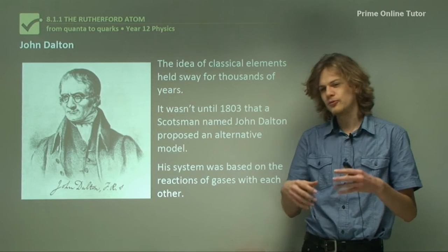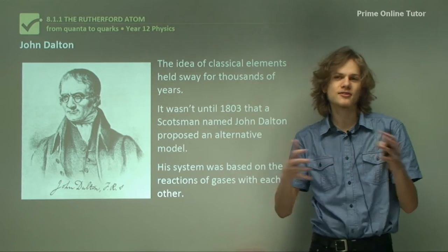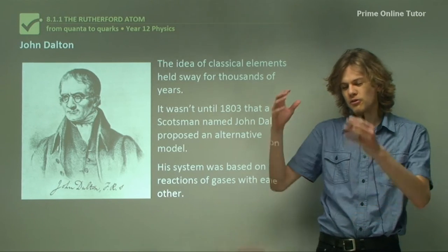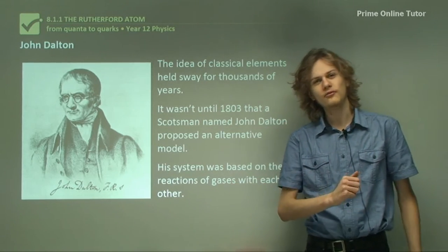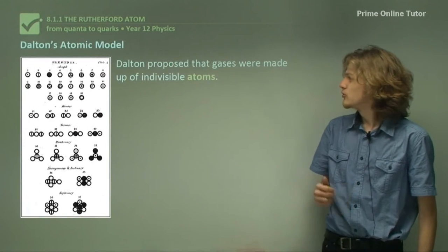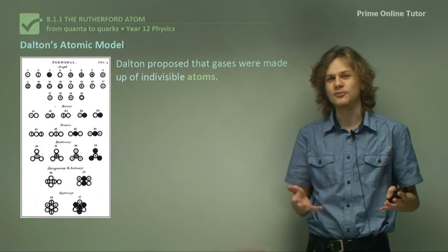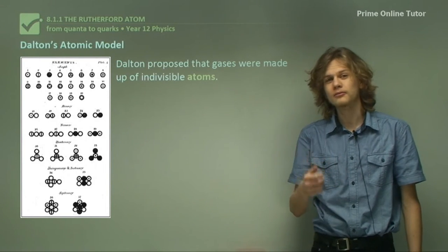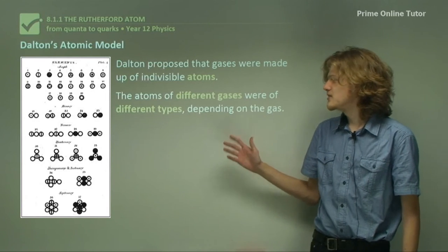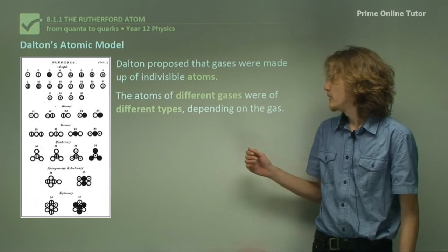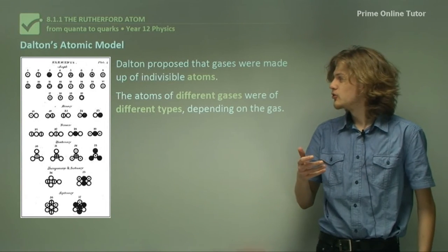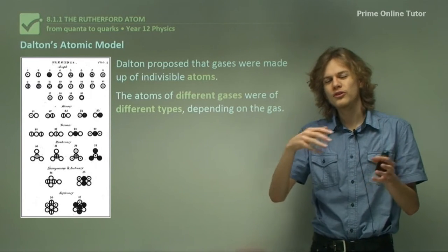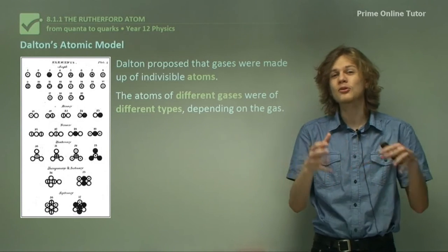So his system was based on the reactions of different gases with each other that he had been experimenting on. It sort of combines parts of both the elemental view of the universe and the atomic view of the universe. So Dalton proposed that gases were made up of indivisible atoms. And he used the same word as Democritus, so indivisible, uncuttable. And the atoms of different gases were of different types. And the type depended on the gas. So you can see at the top of this chart that he made, there are about 20 different circles with different symbols on them. And these are the different elements of gas that he had identified.